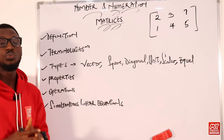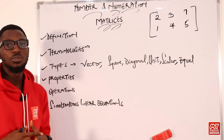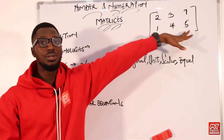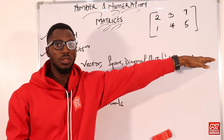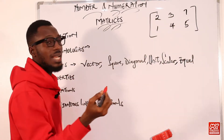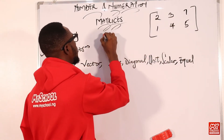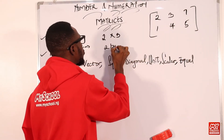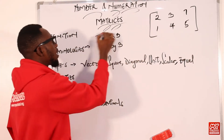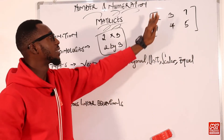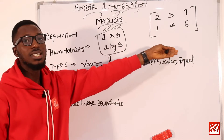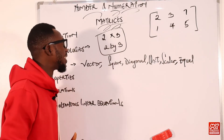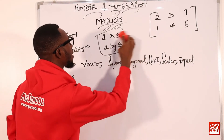We have some terminologies to understand when it comes to matrices. Rows are horizontal and columns are vertical. This matrix has two rows and three columns, so that is a two by three matrix. This expression represents the dimension, or the size, or the order of this matrix. So if you are asked what is the dimension, size, or order — the answer is two by three.